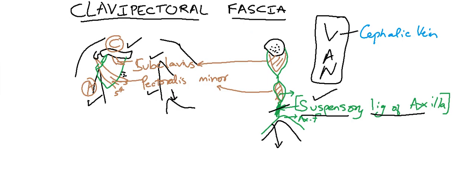The next structure is the artery. It is thoracoacromial artery. And the N is for the nerve. Which nerve? The lateral pectoral nerve.